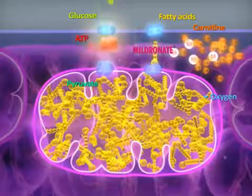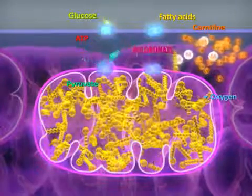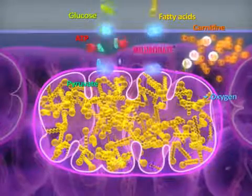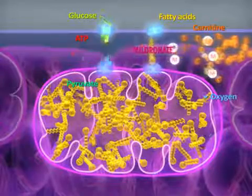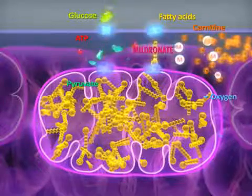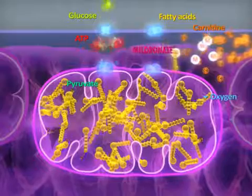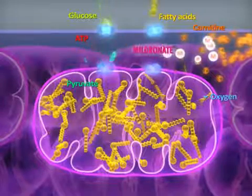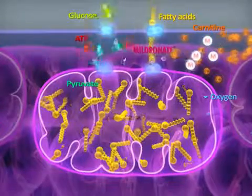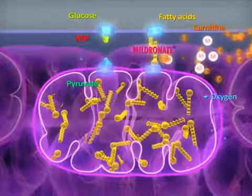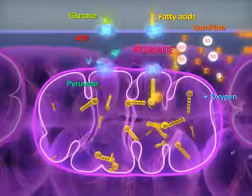It provides protection to different cells of the body and their energy supply during ischemia and increased physical activity. Mildronate works through the partial decrease of carnitine in the cell, which produces a decrease in the oxidation rate of fatty acids. Subsequently, harmful byproducts from the degradation of fatty acids are reduced in the mitochondria.